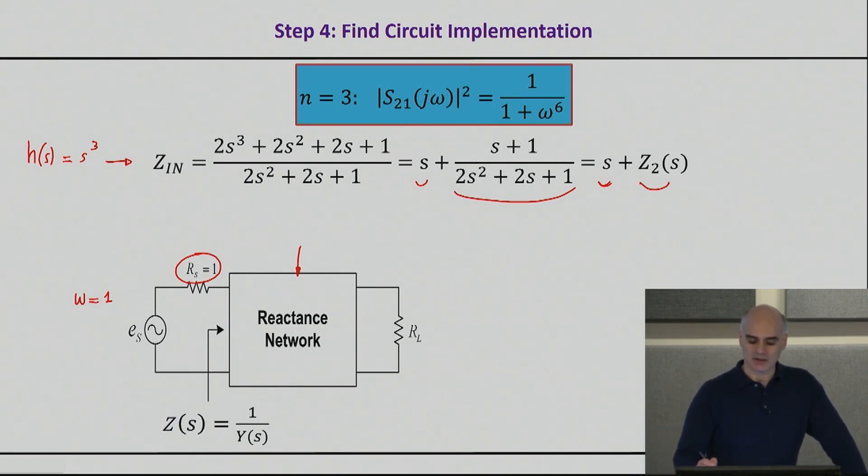essentially what you might be thinking in your mind is what is the impedance of an inductor L or a capacitor C. An inductor L actually has an impedance of S times L, J omega L or S times L, while a capacitor has an impedance of 1 over SC. And so once you have this in your mind, it doesn't actually take much to realize that this equation here that says my input impedance is S plus another impedance simply almost screams for a series inductor.